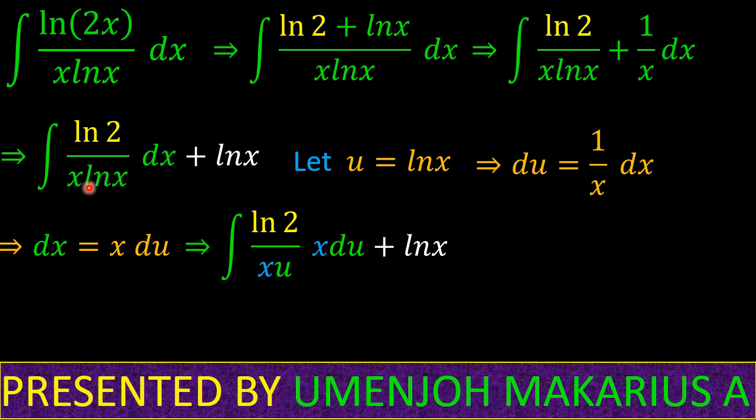ln 2 over xu times x du. The x's cancel, giving us the integral of ln 2 over u du plus ln x. Natural log of 2 is simply a constant,